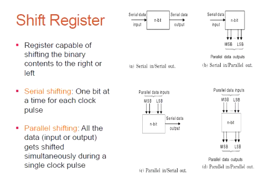The bits stored in shift registers can be made to move within the registers, or in and out of the registers, by applying a clock pulse. Such registers are called shift registers. A shift register is capable of shifting binary information to the right or left. There are two types of shifting: serial shifting, where one bit at a time is transmitted per clock pulse, and parallel shifting, where all the data gets shifted simultaneously during a single clock pulse.